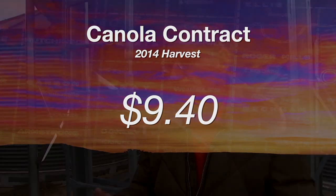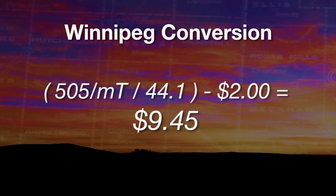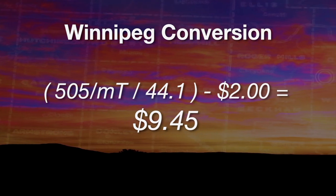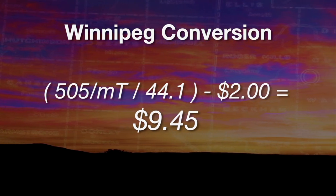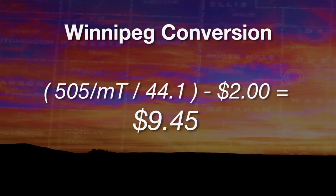Six weeks ago it was in the $9.75 range, so it's falling off a little bit. Producers want to watch canola prices on the Winnipeg Exchange. It's in metric tons in Canadian dollars — right now it's around $505 a ton. They can divide that by 44.1 to get into bushels, and then subtract a basis of about $2. So if you take $505 divided by 44.1 and subtract $2, you get about that $9.40 forward contract.